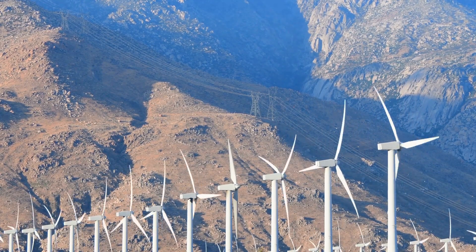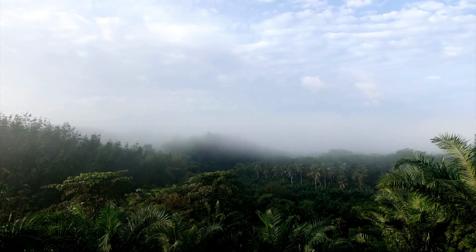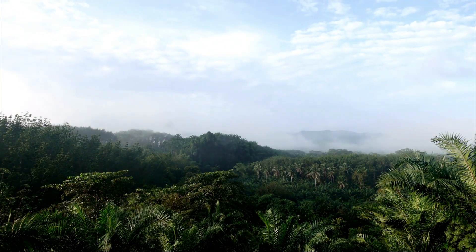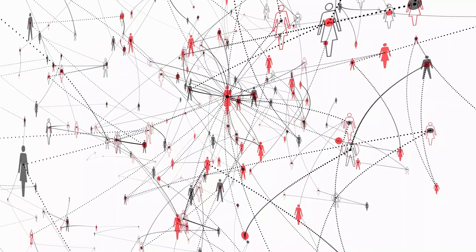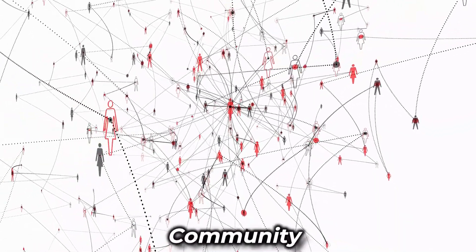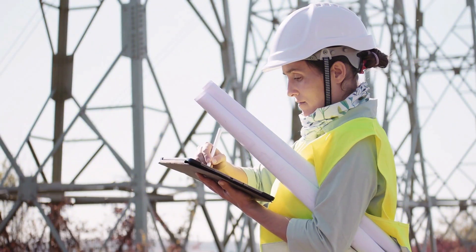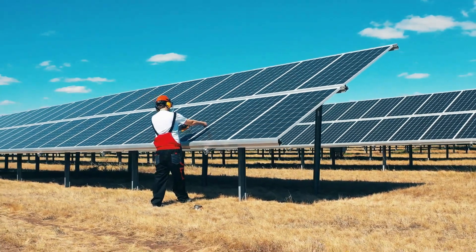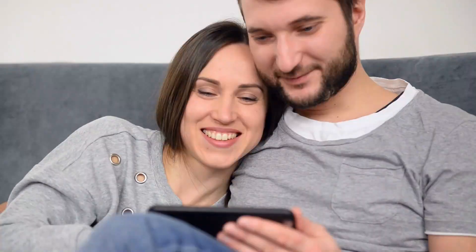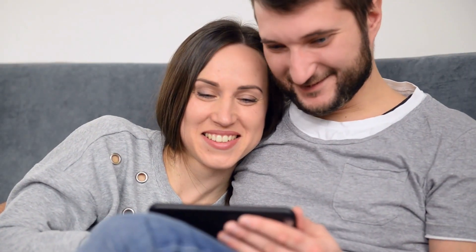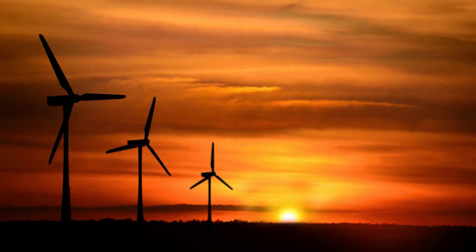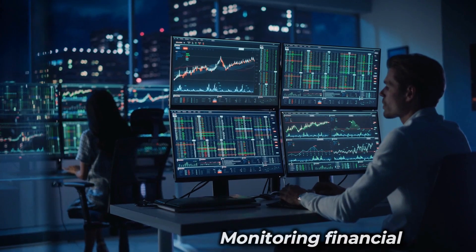To start a successful solar farm, it is important to conduct thorough research and planning, including considering the local climate, energy demands, and regulatory requirements. The solar farm should be designed and constructed to meet the specific needs of the community and to ensure optimal energy production. The installation of solar panels, inverters, and other electrical components should be carefully managed to ensure proper operation and maintenance of the solar farm. In addition to the steps outlined in the video, it is important to monitor and maintain the solar farm regularly, including tracking energy production, performing routine maintenance, and monitoring financial performance.